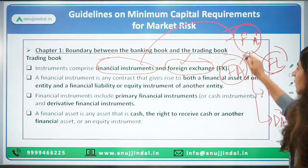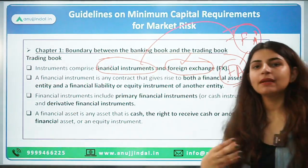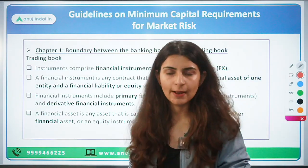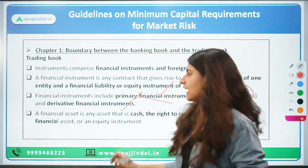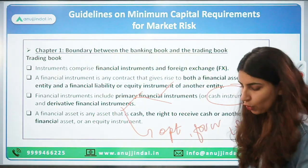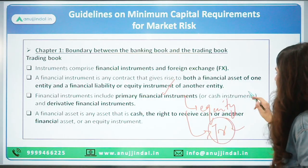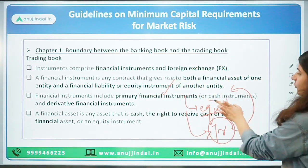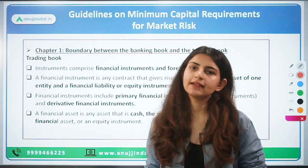A financial instrument will create a financial asset for one entity and a financial liability for another. It includes both primary instruments and derivative instruments. Primary instruments are those that can be converted into cash — such as equity, trade receivables, trade payables, equity instruments, and any investment in deposits. For one party it becomes a financial asset; for the other it becomes a financial liability. For example, a bill receivable is a financial asset for one entity, while the same bill is a financial liability for another.